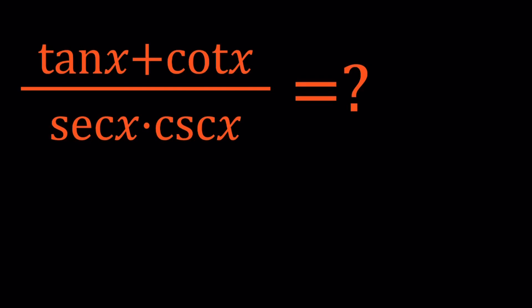Hello everyone. In this video we're going to be simplifying a trigonometric expression. We have tangent x plus cotangent x divided by secant x times cosecant x.